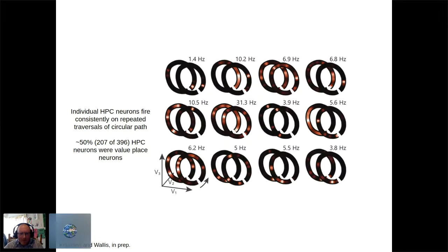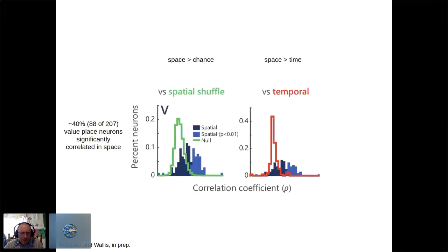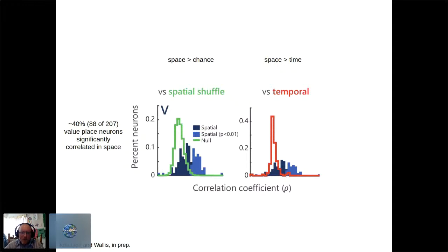Of the identified place cells, a correlation analysis comparing activity on pass one versus pass two found about 40% were significantly correlated in space. A spatial shuffle control confirmed significantly more correlation than chance. A temporal correlation control — addressing the competing hypothesis that neurons fire periodically in time, since hippocampus tracks elapsed time — showed that pass-to-pass spatial correlation exceeded what would be expected from purely temporal firing rates.